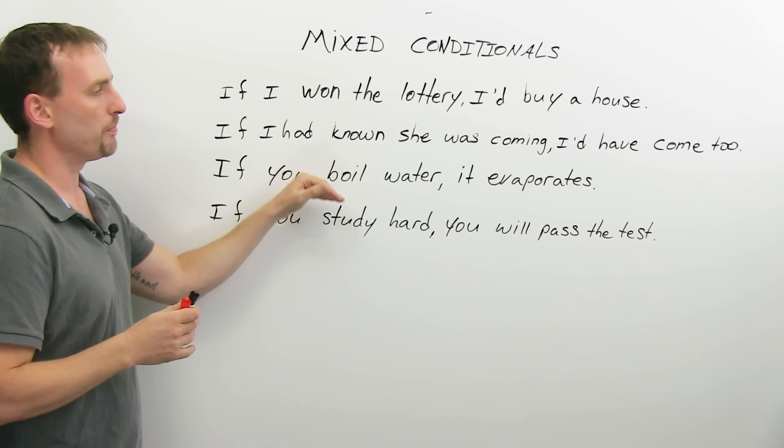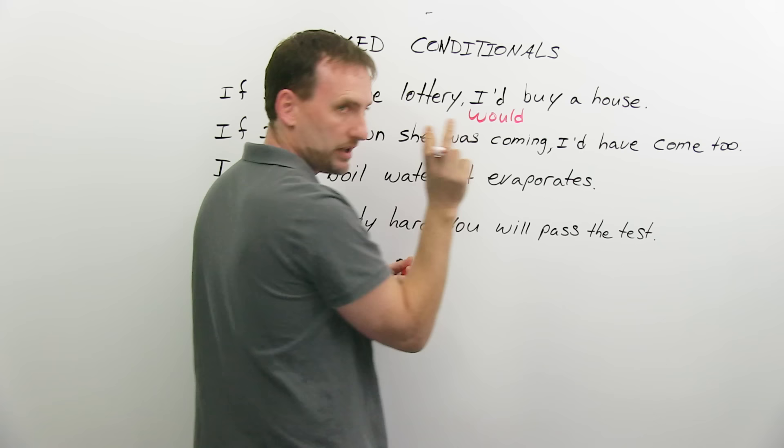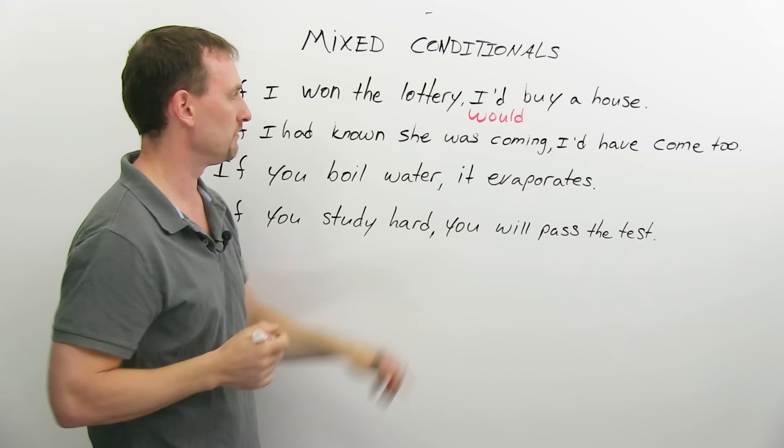So, here are the four main types of conditionals you would learn. If I won the lottery, I'd buy a house. This is would. I've contracted it to I'd. If I won, I have simple past tense plus would in the second clause, in the condition clause, in the result clause.